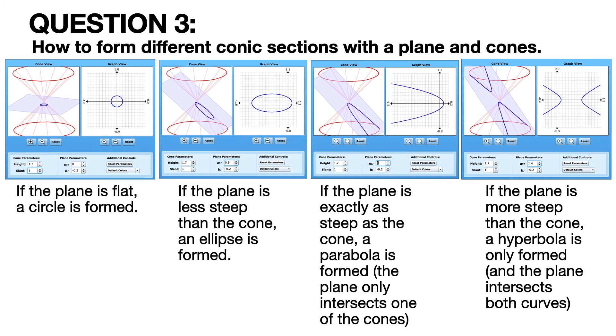So at that single moment, a parabola is formed. And if the plane is steeper than the cone, then a hyperbola is formed. And the plane has to go through both of the cones, forming the two branches of the hyperbola.